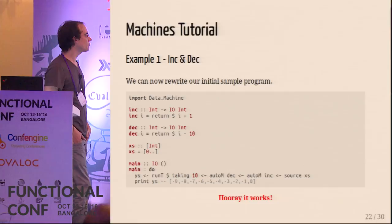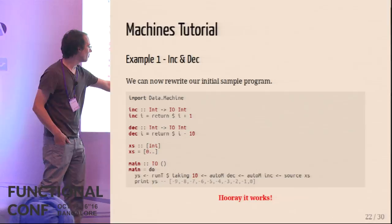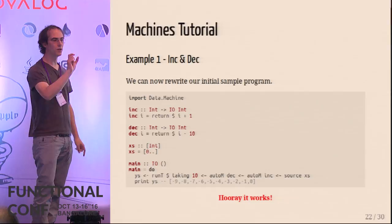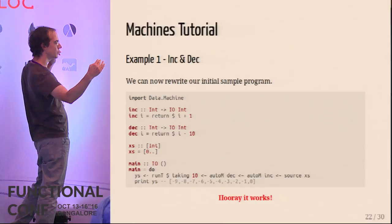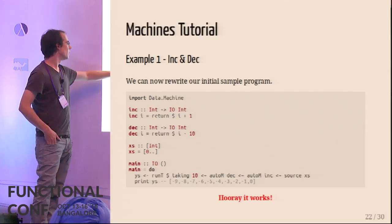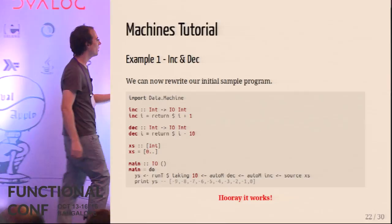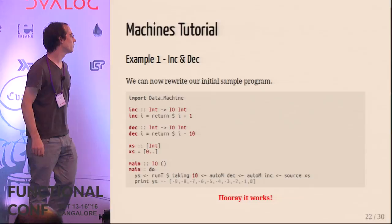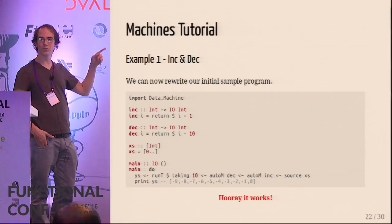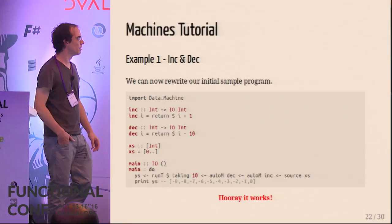Let's rewrite our initial example. We have our `inc` and `dec` functions and create our pipeline using the composition operator for machines. First we source our infinite integer list `xs`, transforming that foldable into a source. Then we apply our increment function using `autoM`, which lifts the IO function into a ProcessT working in the IO monad. We do the same for decrement. Then we call `taking`. We get all three things we wanted: composability, constant space and time, and interleaved effects.